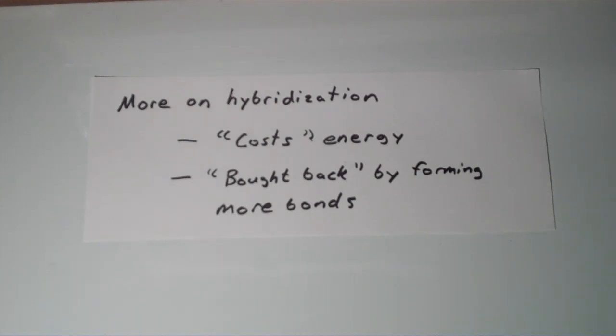Usually the lowest energy or happiest situation is when that charge or electron density is distributed more evenly. So this explains why individual atoms by themselves don't hybridize. Now in situations where hybridization is a valid model, that energy cost associated with forming these asymmetric hybrid orbitals is usually regained or bought back when that atom forms more bonds. So as a result, central atoms tend to hybridize while terminal atoms tend not to hybridize.